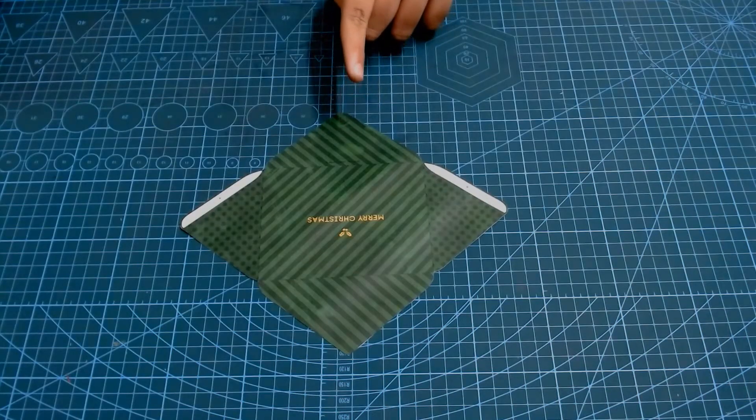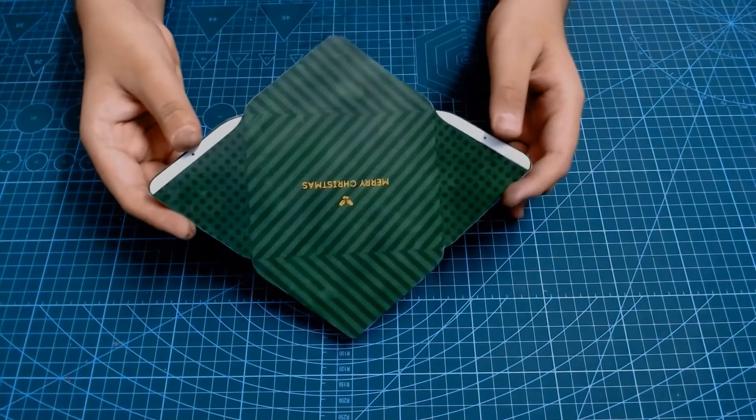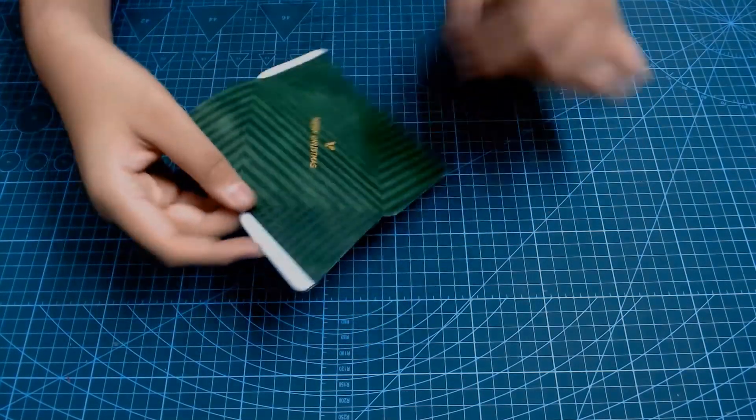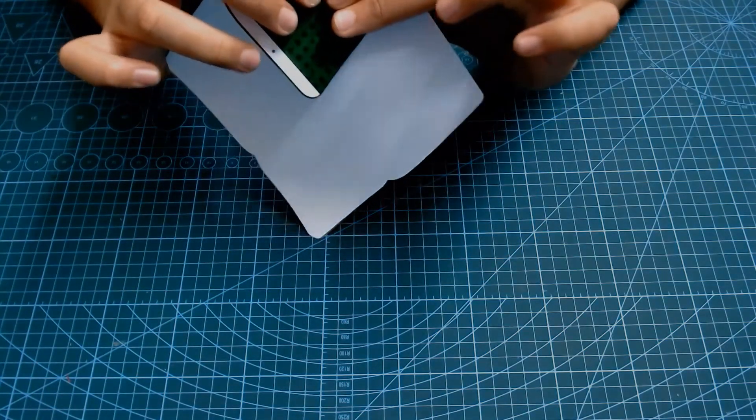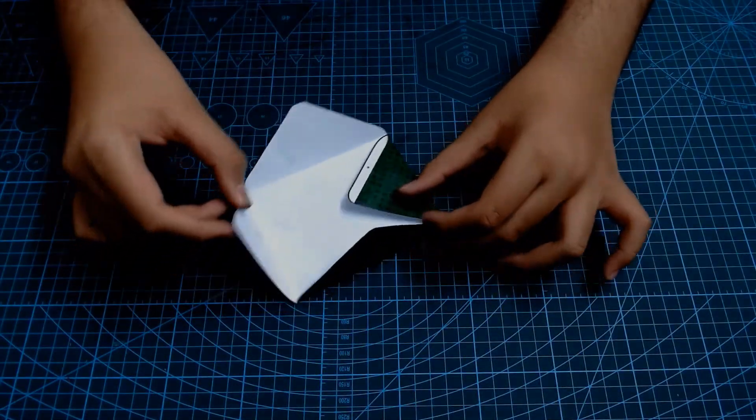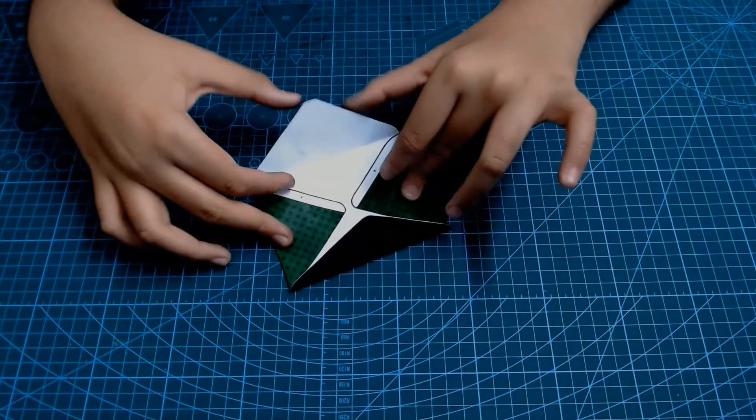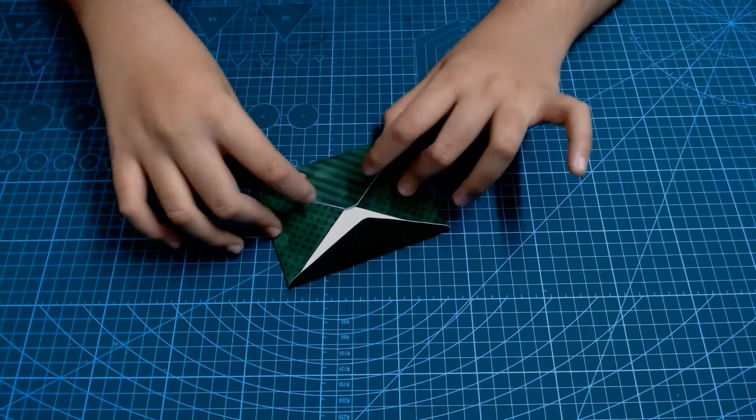And if you want to send this card to someone very special, the creator has even been kind enough to make a small envelope for us to put it in. So, you can just start folding on these lines. Then, what you have to do is push these two flaps down and stick this flap by applying glue to these white tabs.